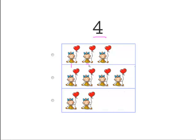1, 2, 3. Ok, 3 little girls here, so that's not 4. 1, 2, 3, 4, there we go. 4 and 4.